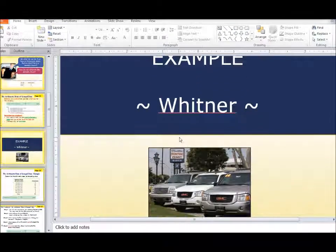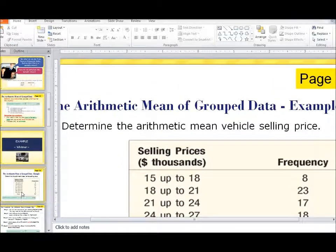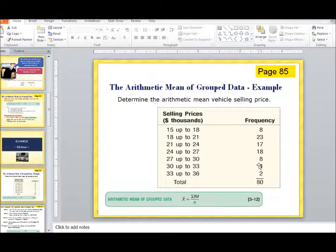We are going to go to our example here. I am using from our textbook the Wittner Autoplex example. Here is a sample of a frequency table. We have thrown away the raw data, but what we know is that cars that were within the 15,000 to less than 18,000 price range, we sold 8 of those. You can go through and see from 18,000 to less than 21,000, this is how many we sold. Just a basic frequency table. But then it occurs to us that we would like to know the arithmetic mean.